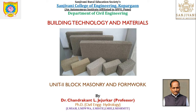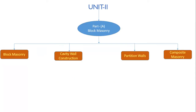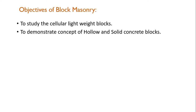Welcome to the lecture on block masonry and formwork. This is unit number two. In the previous unit we discussed brick masonry and stone masonry. Under unit number two, part A is block masonry, which is subdivided into block masonry shell, cavity wall construction, partition walls, and composite masonry.